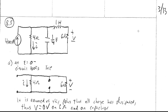In problem 8.5 we have the RLC circuit shown on screen. We have a current source of 4u(t) amps, which means that prior to t equals 0 it behaves like a 0 amp current source, and from t equals 0 onward it behaves like a 4 amp source.